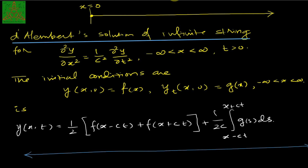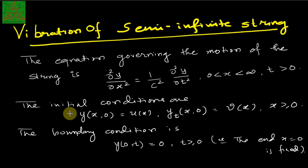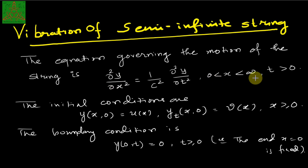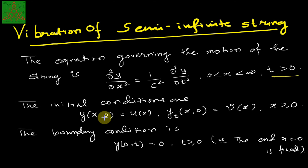The governing equation for the vibration of a semi-infinite string is described as follows: the wave equation has x between 0 to infinity, since one end is fixed, and time t greater than 0. Initially at t equal to 0, the displacement is u of x, and the velocity is v of x, since velocity is the derivative of displacement with respect to time.